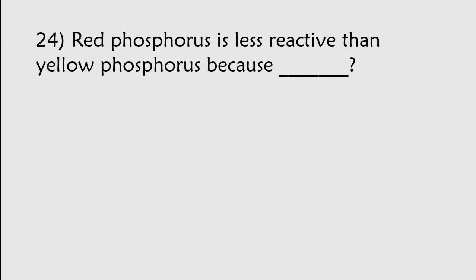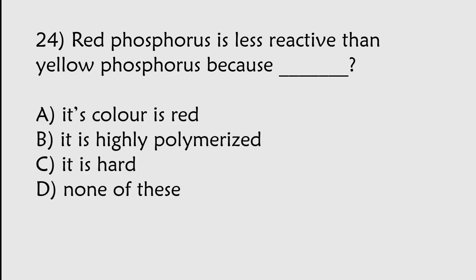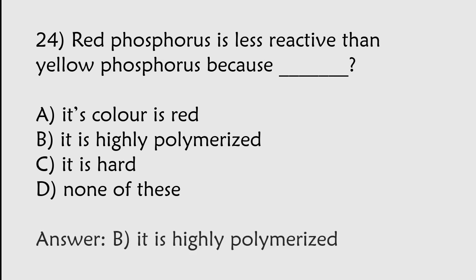Red phosphorus is less reactive than yellow phosphorus because: Its color is red, It is highly polymerized, It is hard, None of these. The correct answer is option B. Red phosphorus is less reactive than yellow phosphorus because it is highly polymerized.